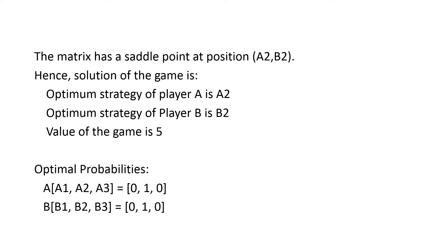You also have to write the optimal probabilities for the players. Player A has strategies A1, A2, and A3. Since A2 is the optimum strategy, in a pure strategy game the player selects only one strategy and ignores the others — the sum of probabilities is always 1. So Player A assigns probability 1 to A2, and Player B assigns probability 1 to B2.